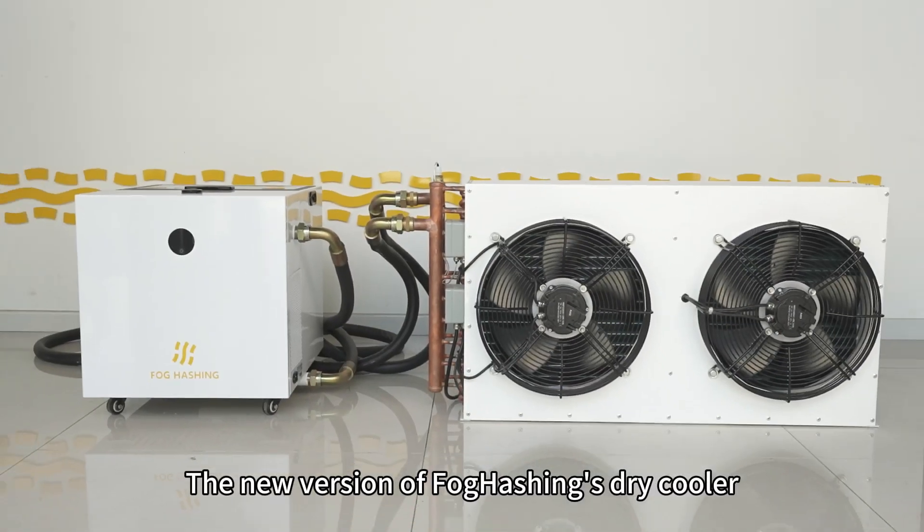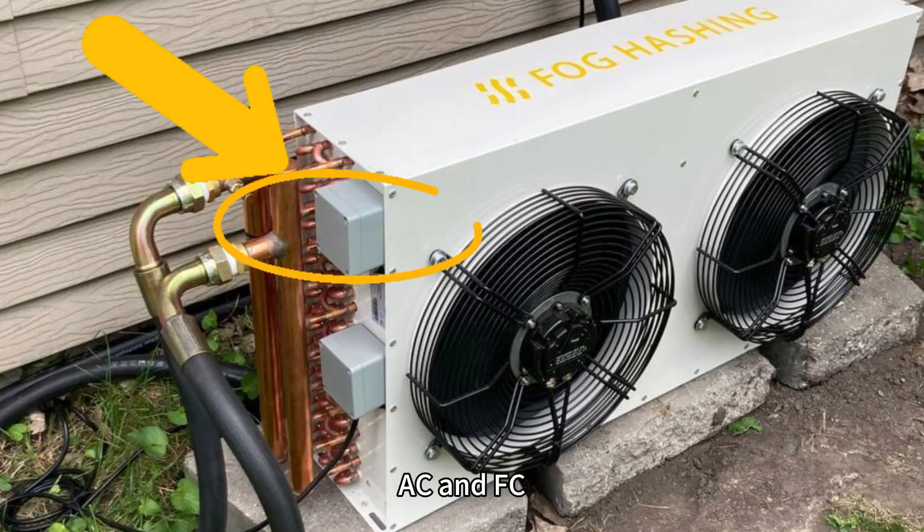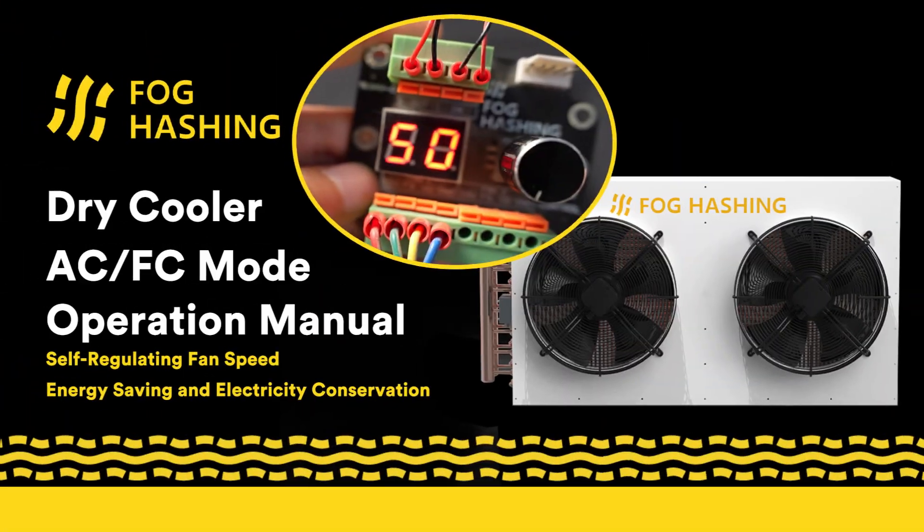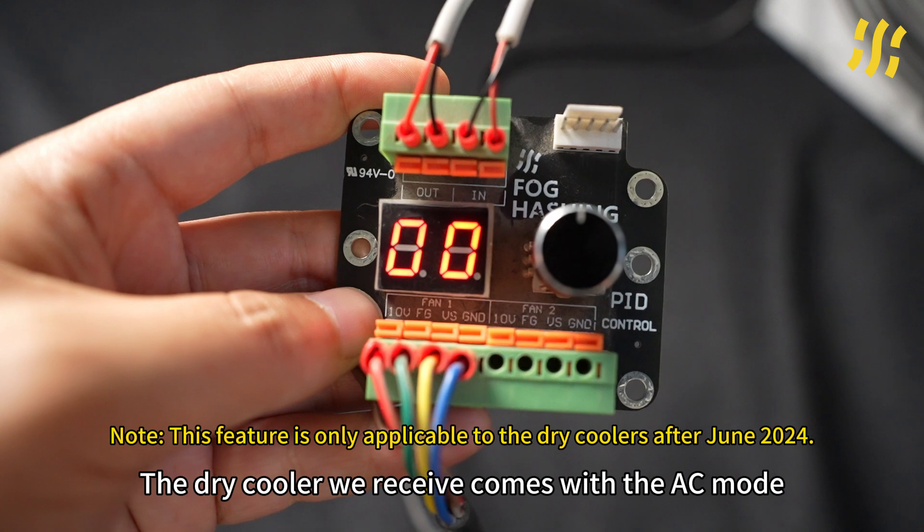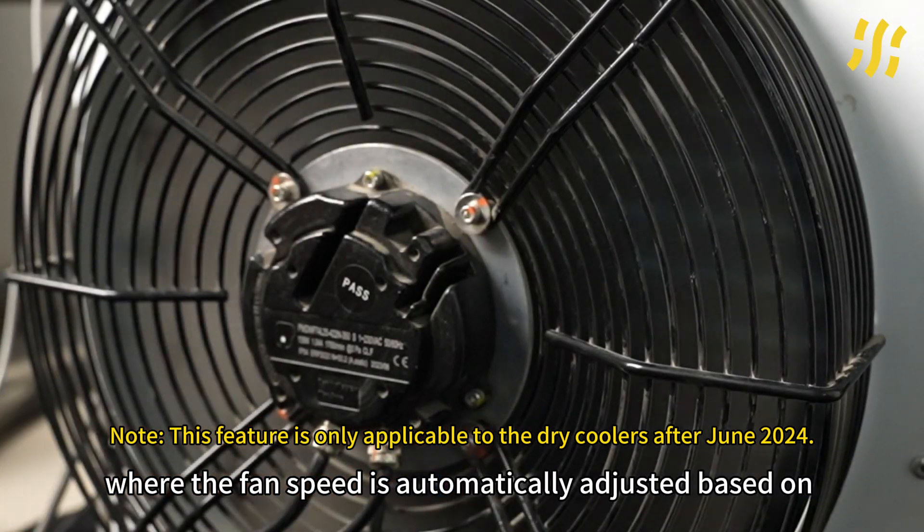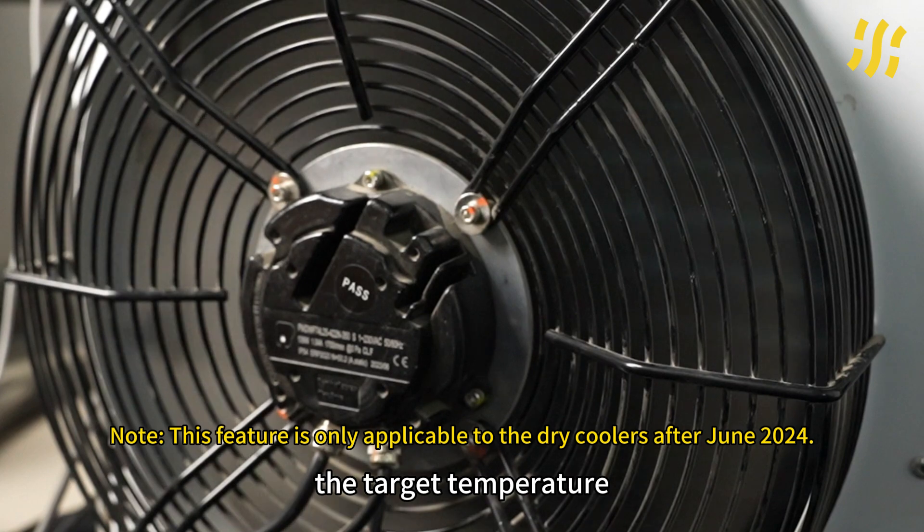The new version of Fog Hashing's dry cooler comes in modes AC and FC. The dry cooler we receive comes with AC mode as default, where the fan speed is automatically adjusted based on the target temperature.